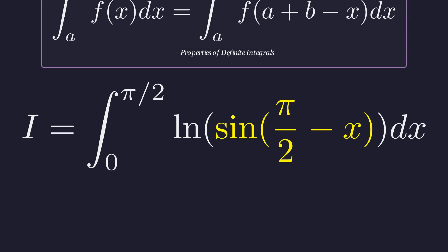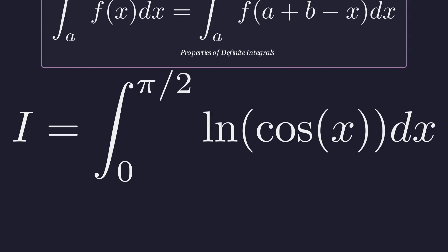Now we can use the trigonometric co-function identity which states that sine of pi over 2 minus x is equal to cosine of x. This gives us a second equally valid expression for our integral i.